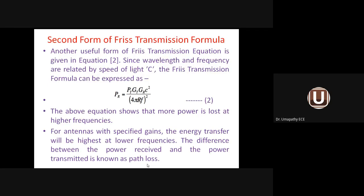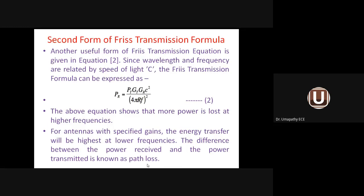The difference between transmitted and received power is called path loss — the loss occurring along path R between transmitter and receiver. For example, transmitting 100 W and receiving 90 W means path loss = 10 W.